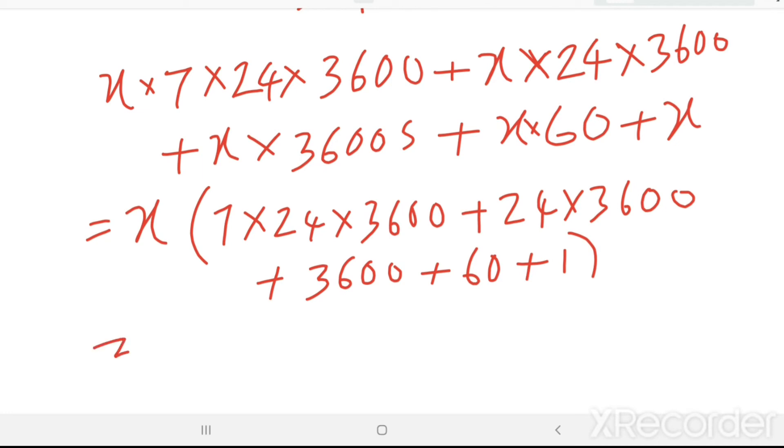Now, adding all these, here the unit place digit is 0, should be 0 because there are three zeros in the number. Here also unit place digit is 0, here also 0, here also 0. Then unit place digit of this sum total will be 1.